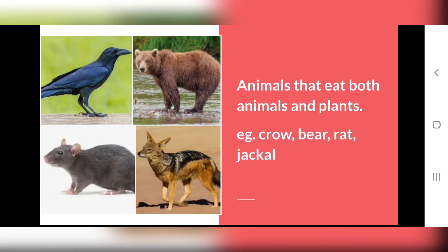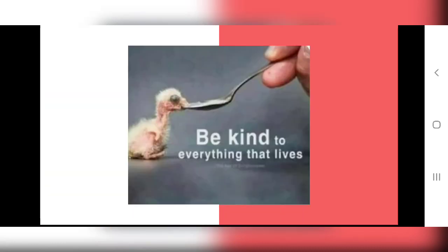So that is all for today. We will quickly have a recap. Today we have studied about different groups of animals on the basis of the food they eat. First is Herbivorous Animals, second group is Carnivorous Animals, and the third group is Omnivorous Animals. So that is all for today. Thank you everybody, and have a nice day. Until we meet for the next video, keep smiling and be happy. Thank you.